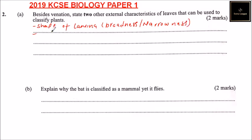The other one is type of leaf. We have type of leaf — it may be simple or compound. Simple or compound leaf.